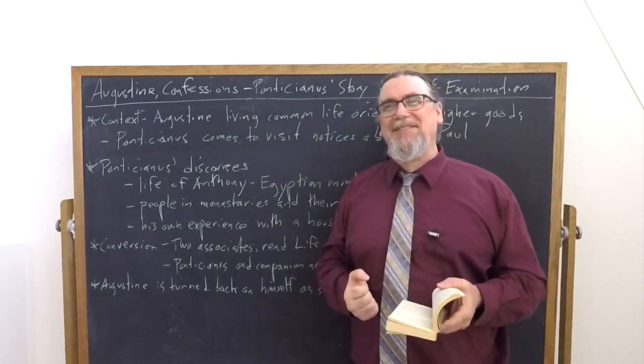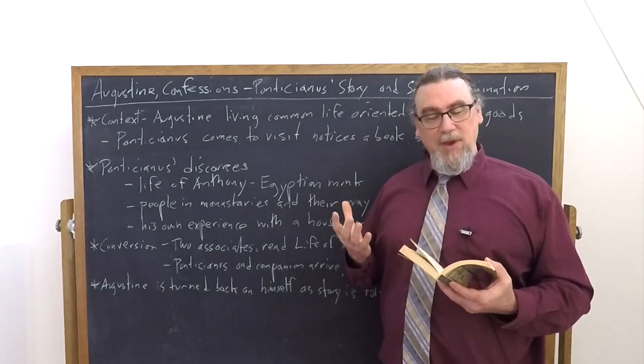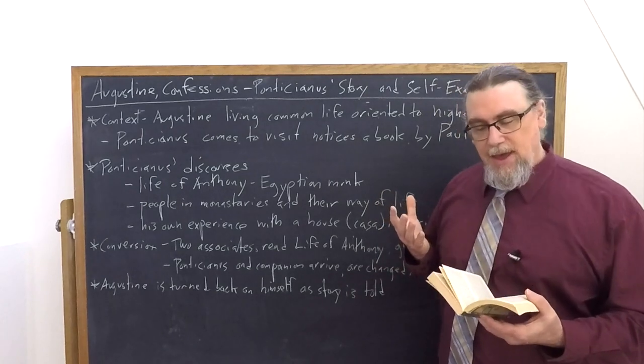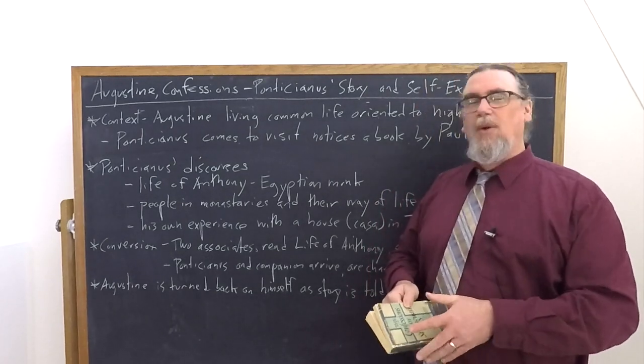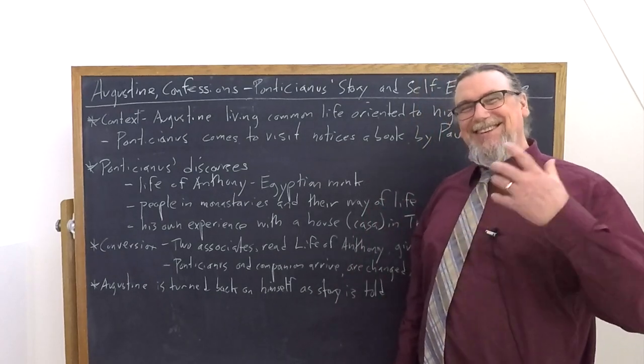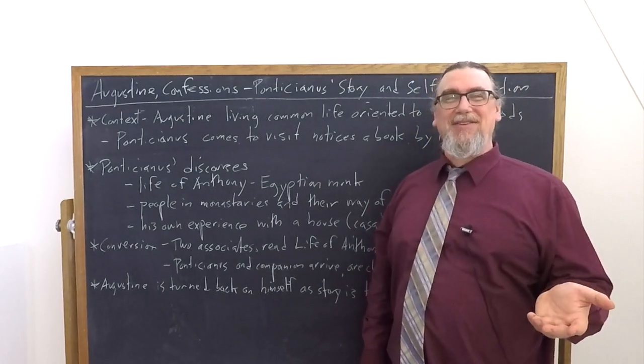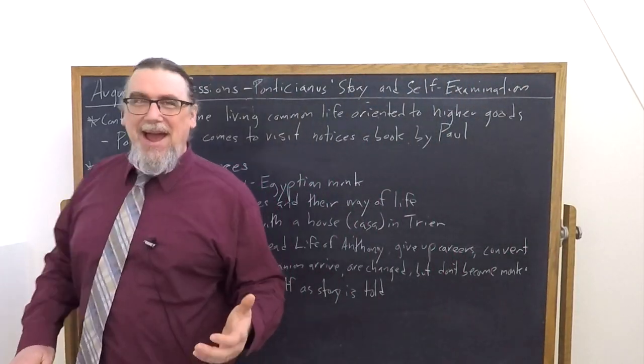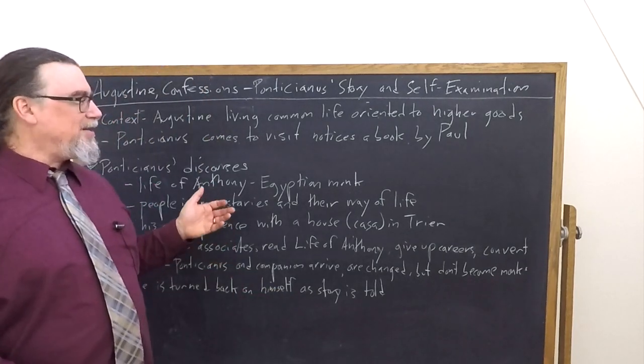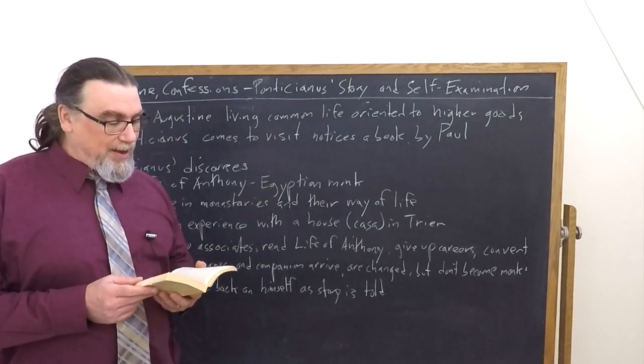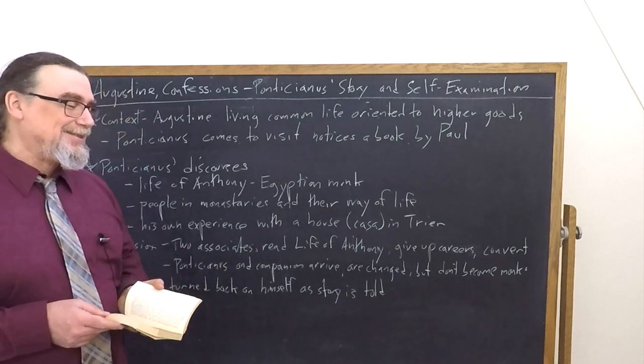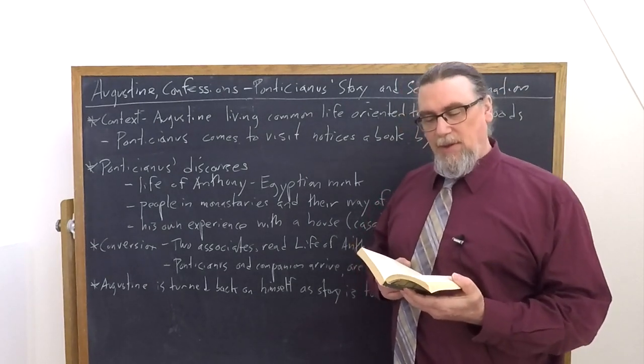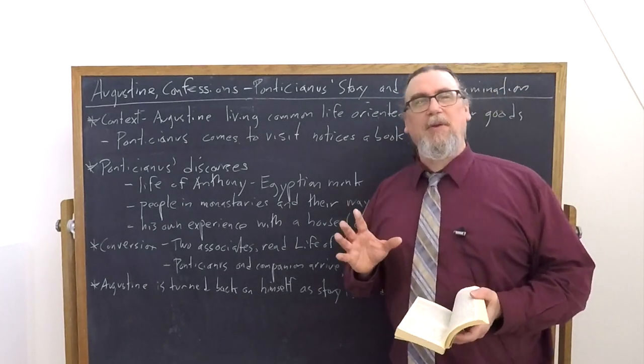So the life of Anthony shows up twice in this story. One of them began to read this book, to marvel at it and to be aroused by it. As he read it, he began to meditate on taking up such a life. Now this, you could say, well, this is a midlife crisis, right? These are successful people. They're actually like special agents, agentes in rebus, right? So they're important guys. They've got careers and they read this book. And so the one reads it and he's like, you know, my life is kind of a waste, actually.